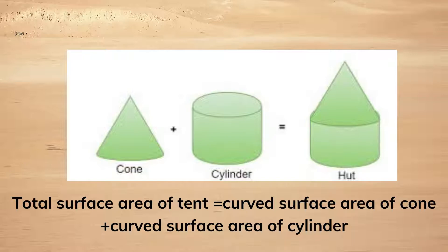Our next figure is a hut, which is made up of a conical portion and a cylindrical portion. So the total surface area of the tent or hut is the curved surface area of the cone plus the curved surface area of the cylinder.